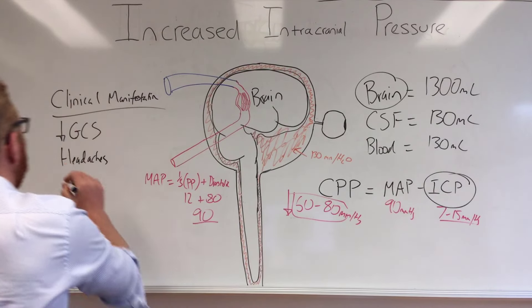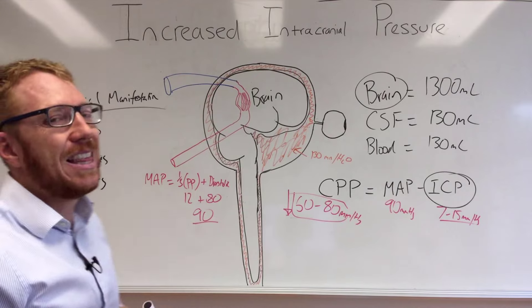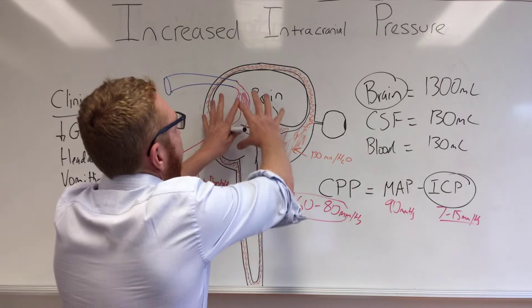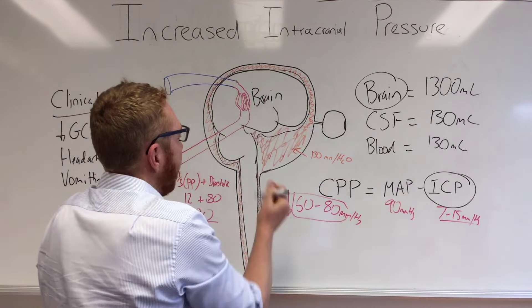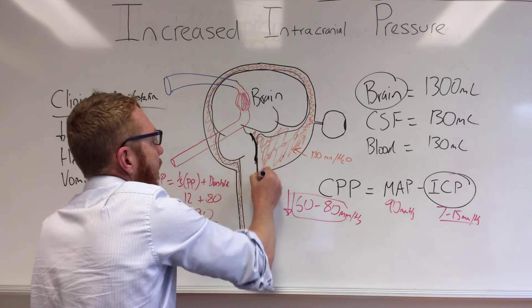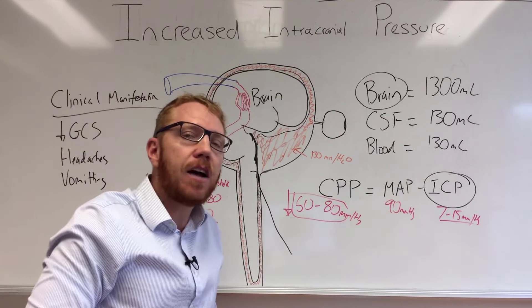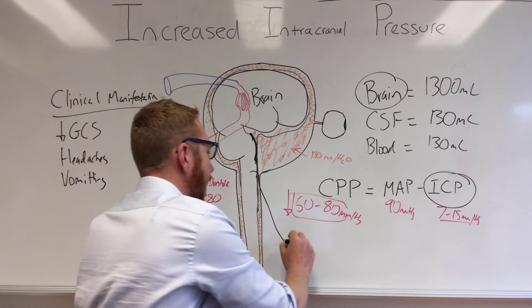The next one is vomiting. The reason why this comes about: as the pressure increases, here's your pons, here's your medulla, you've got a nerve coming off that goes down to your heart, your lungs, your GIT. This is your vagus nerve.